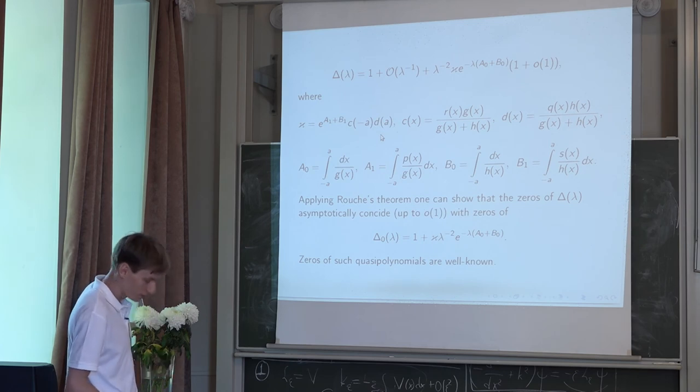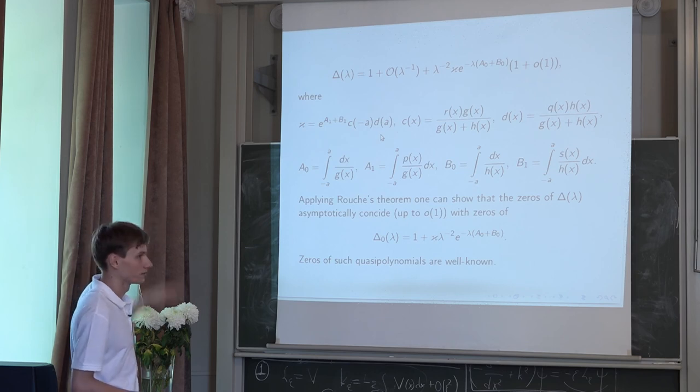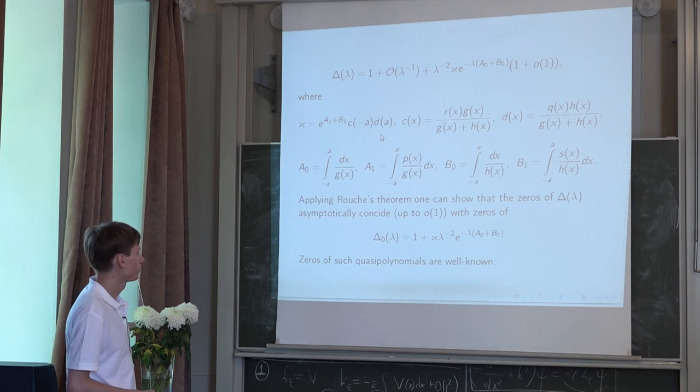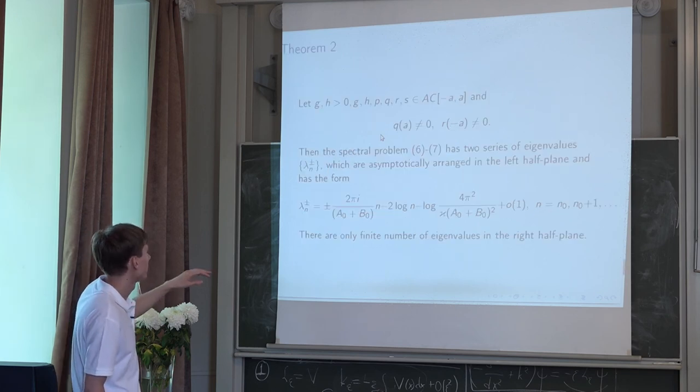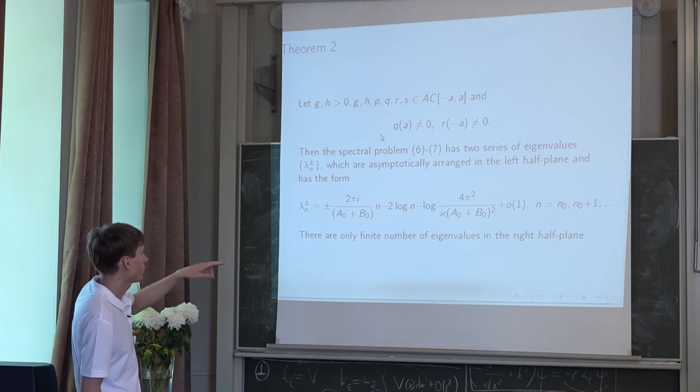Okay. And then we want to find the asymptotics for the zeros of delta(lambda). And when you say asymptotics up to which? Up to O of minus one. Oh sorry, up to small o of one.